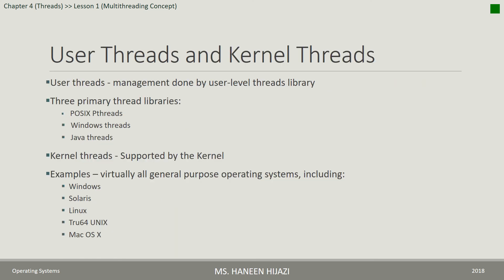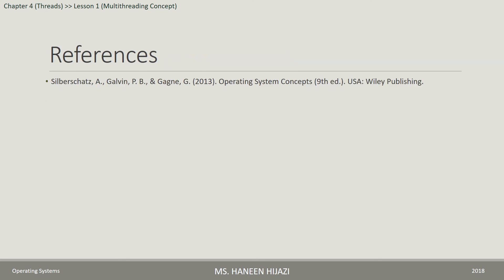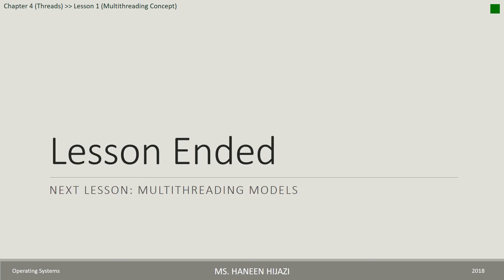User threads and kernel threads: there are two types of threads — user threads and kernel threads. User threads execute user space code and are managed by a user-level thread library without kernel support. Important examples of user thread libraries include POSIX PThreads, Windows Threads, and Java Threads. The second type, kernel threads, run only kernel code and are supported and managed by the kernel. All general-purpose operating systems support kernel threads, for example Windows, Solaris, Linux, Tru64 Unix, and Mac OS X. This lesson has ended; the next lesson will be about multi-threading models.